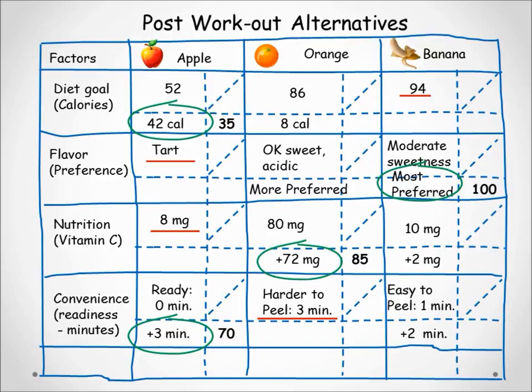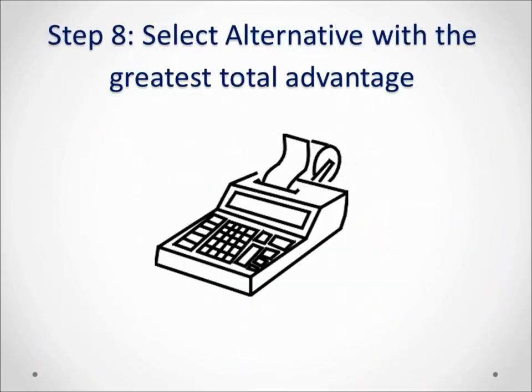The underlined attribute is given a score of zero since there is no advantage for that alternative in that factor — we'll leave it blank for simplicity. Because scoring reveals the preferences of stakeholders and not just the numbers, good judgment and open dialogue is essential.